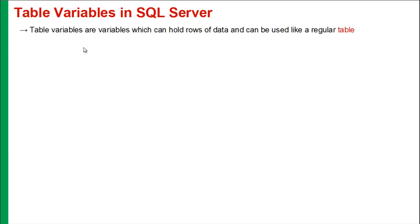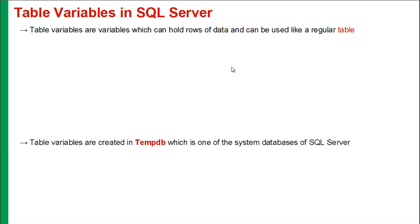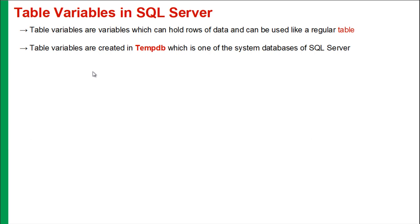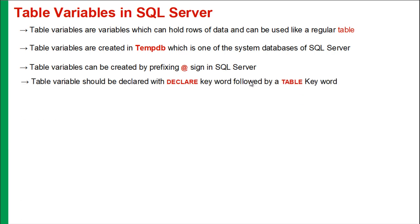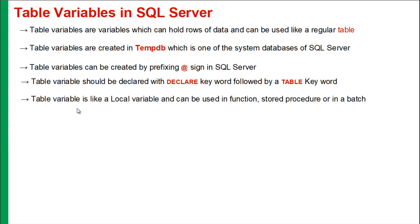Table variables behave like a normal variable in SQL Server. However, they can hold rows of data like a regular table. Table variables are created in tempDB, which is one of the system databases of SQL Server. Table variables can be created by prefixing an at sign, and should be declared with the DECLARE keyword followed by the TABLE keyword. Table variables are like a local variable and can be used in a function, stored procedure, or in a batch.